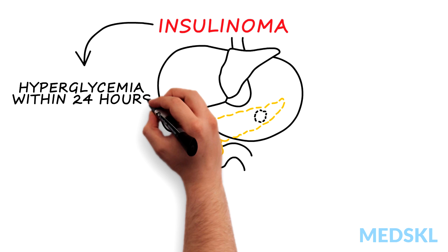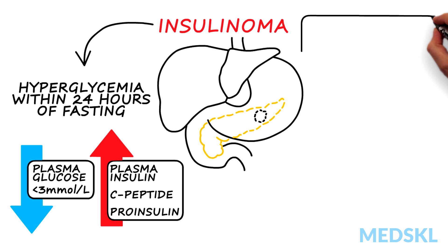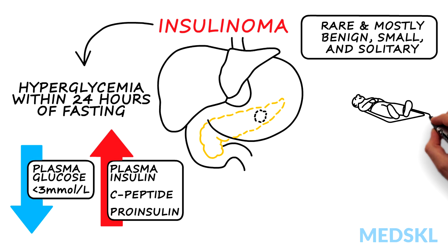With an insulinoma, most patients will experience hypoglycemia within 24 hours of fasting. Despite having a plasma glucose less than 3 mMol per liter, plasma insulin, C-peptide, and pro-insulin levels will be inappropriately elevated. Insulinomas are rare tumors, and most are benign, small, and solitary. They should be localized through imaging and surgically removed.